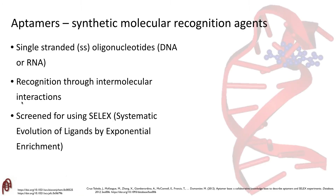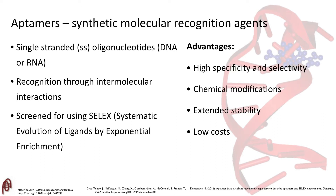In the DeRosa lab, we use synthetic molecular recognition agents known as aptamers in our LFAs as opposed to antibodies. Aptamers are single-stranded oligonucleotides made of DNA or RNA that bind to their targets through a variety of intermolecular interactions such as hydrogen bonding, van der Waals forces, and electrostatic interactions. They are selected for their targets in a process known as SELEX, the systematic evolution of ligands by exponential enrichment. Over antibodies, aptamers have a number of advantages including high specificity and selectivity for their targets, easy chemical modifications, extended stability, and low cost.